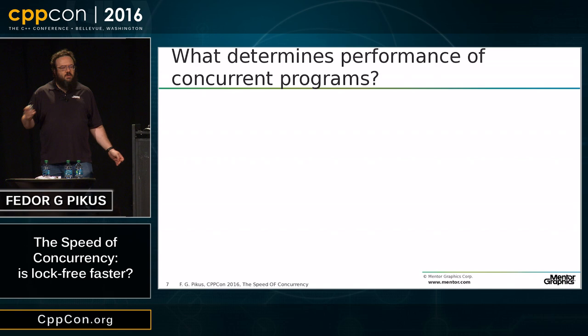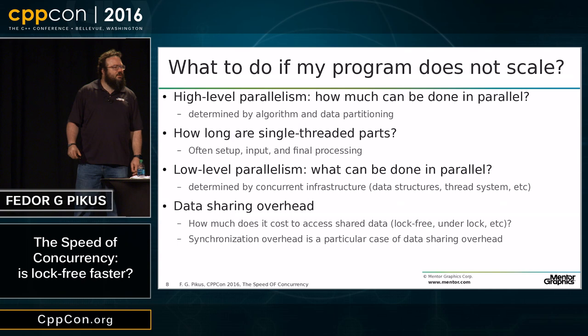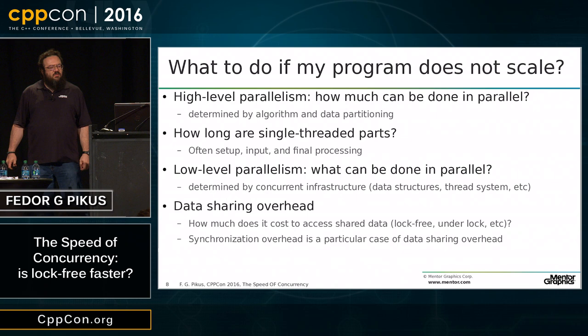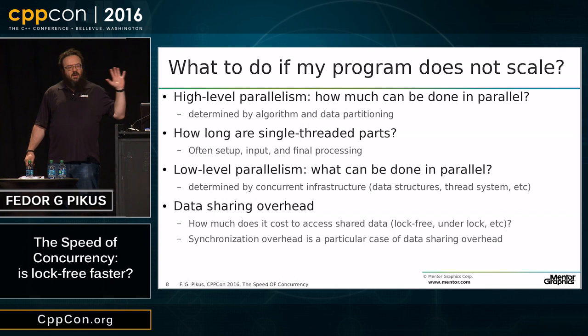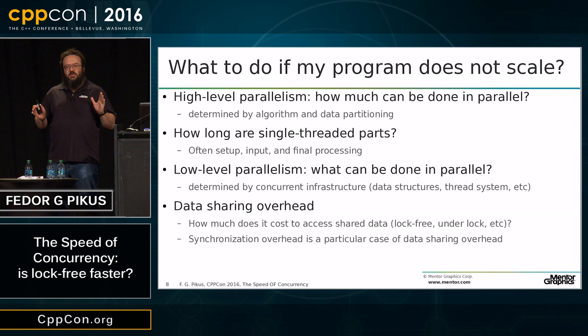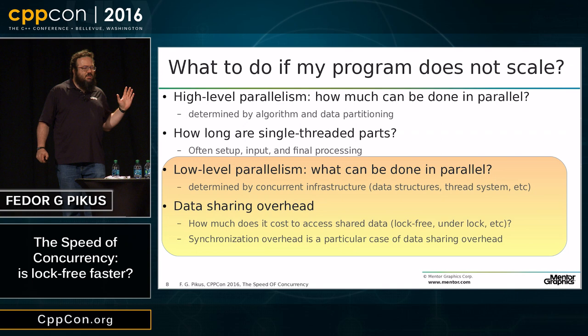What determines the performance of concurrent programs? The practical question is: I wrote a lock-free program, and it doesn't scale. What do I do now? There is a high-level and low-level part to it. High-level parallelism — basically how much work can be done in parallel — is your algorithm and data partitioning. If you have single-threaded parts, how long they are: that's Amdahl's law. Low-level parallelism asks what individual units of work can I do in parallel, and that's the focus of talks on low-level concurrency primitives such as lock-free.